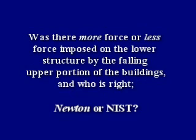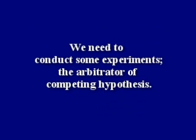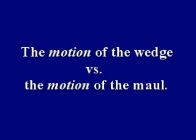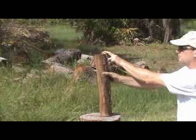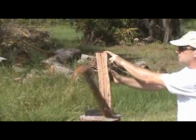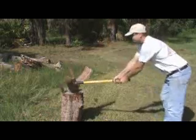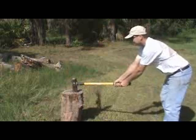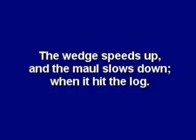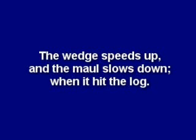Newton or NIST? We need to conduct some experiments, the arbitrator of competing hypotheses. Let's look at the motion of two falling bodies: a splitting wedge and a splitting maul. The motion of this falling wedge and the motion of this maul look similar as both fall through the log, but the wedge speeds up and the maul slows down when it hits the log.